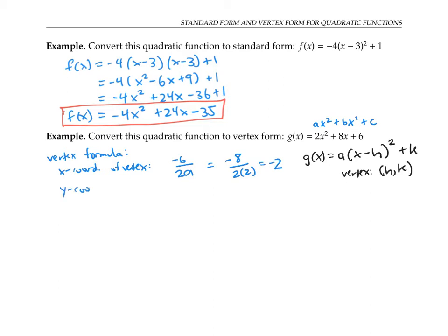To find the y coordinate of the vertex, we just plug in the x coordinate into our formula for g of x. So that's g of negative two, which is two times negative two squared plus eight times negative two plus six. And that works out to be negative two by coincidence. So the vertex for our quadratic function has coordinates negative two, negative two.